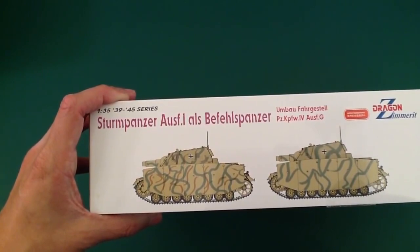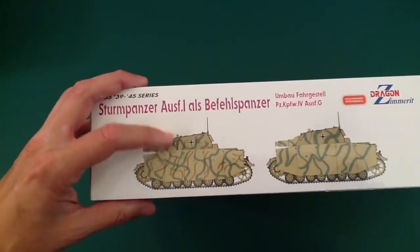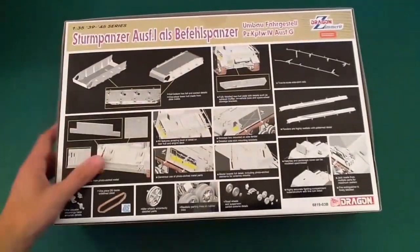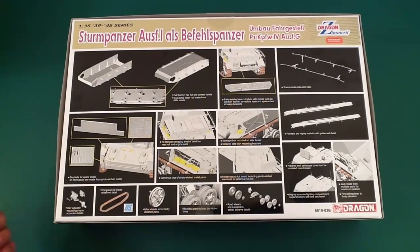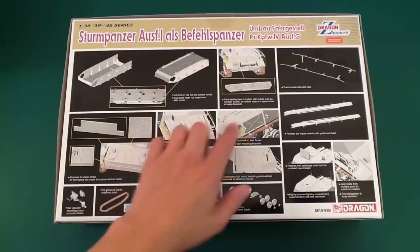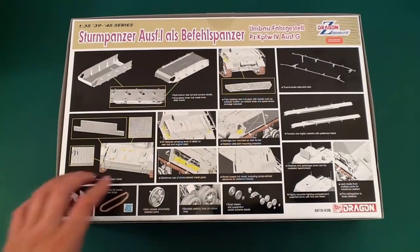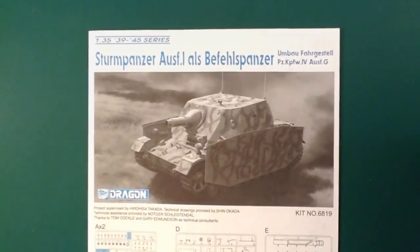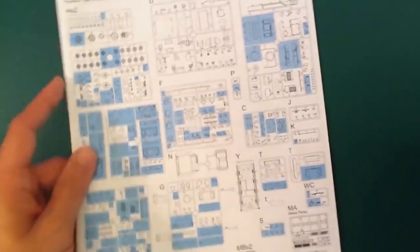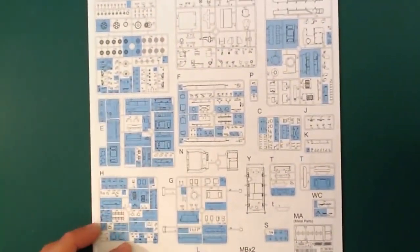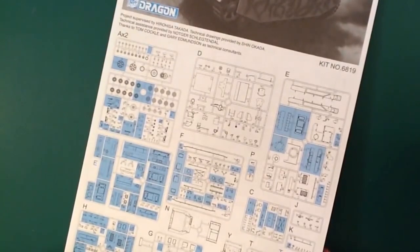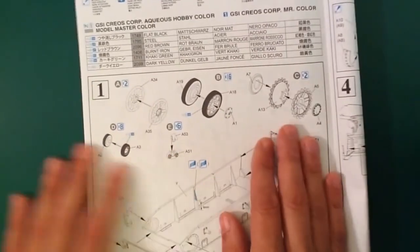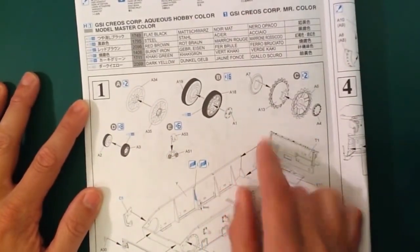Two marking schemes. Everything else seems very similar to any previous Brumbars I've seen, at least the Zimmerit one. The instructions have quite a bit of blue on here. I'm going to assume we've got a few Panzer IV sprues in here, and that would be the reason for the majority of the blue parts. So the suspension will be of the simpler type.